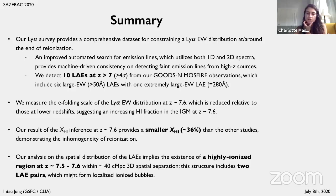A question from Takahiro Morishita, who says: nice talk. Is there a possibility that the largest equivalent width object is an AGN? What is its absolute magnitude?